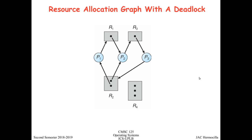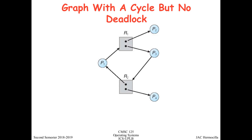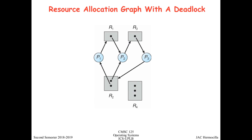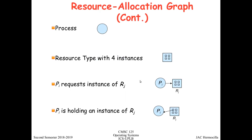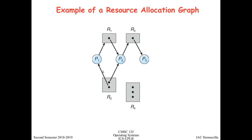If there is no cycle in the resource allocation graph, we are sure that there is no deadlock. But what if we have a cycle in the resource allocation graph? Does it automatically mean that there is a deadlock? It is not necessarily true that if you have a cycle there is already a deadlock. In this example, there is no cycle, so we are sure that there is no deadlock.